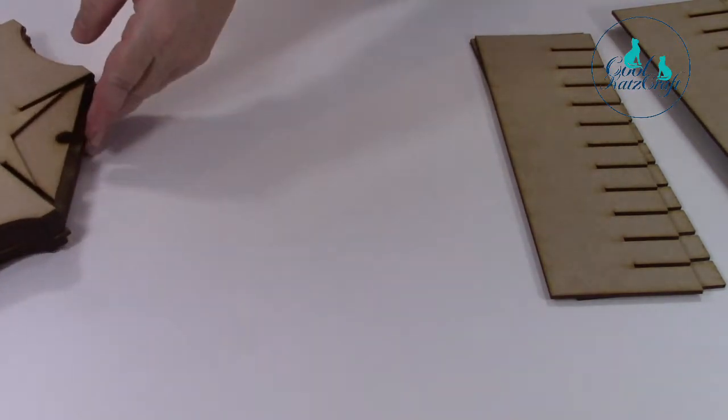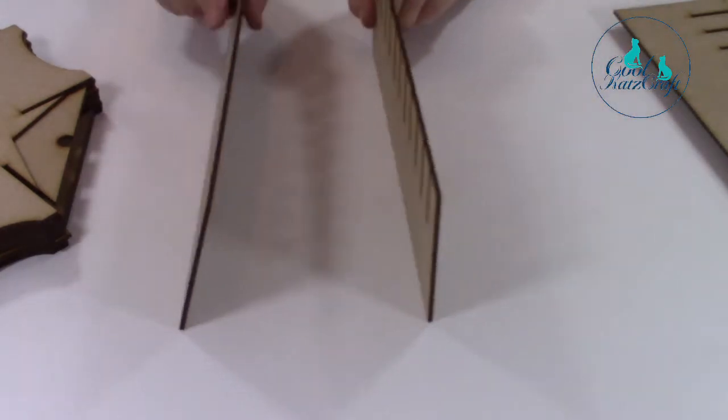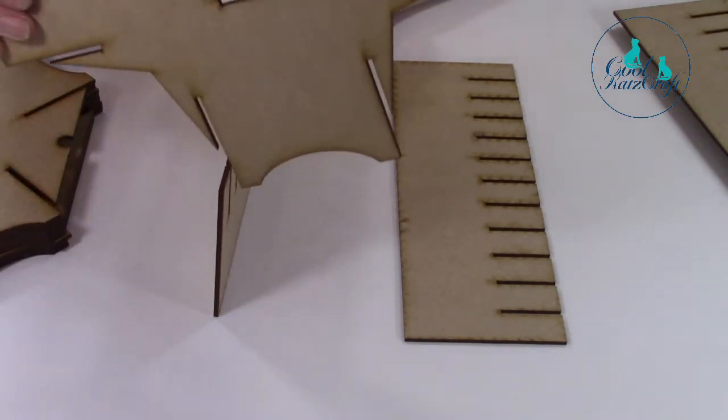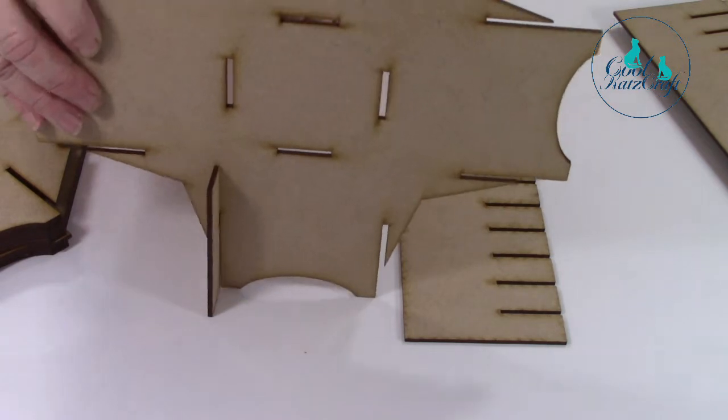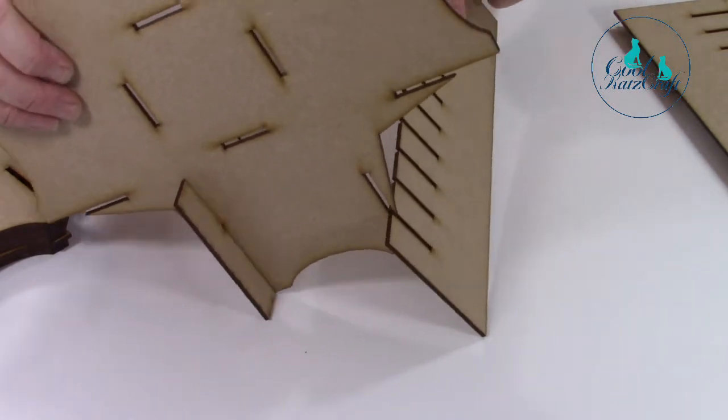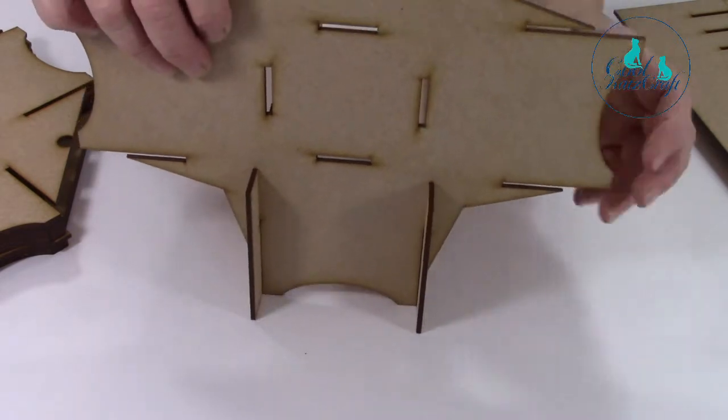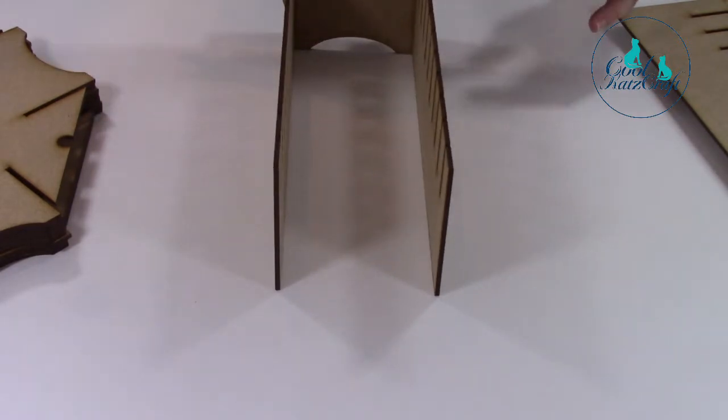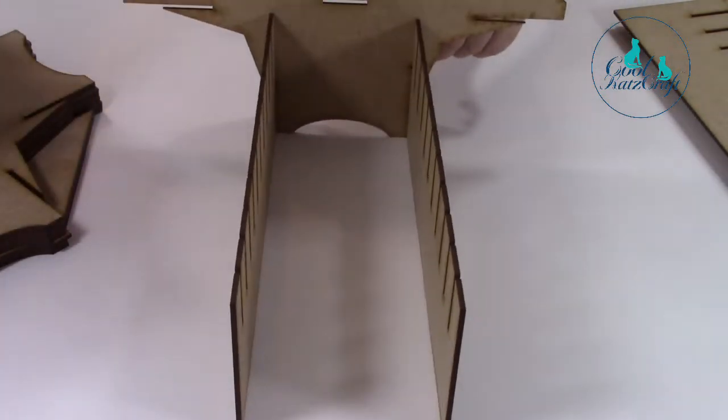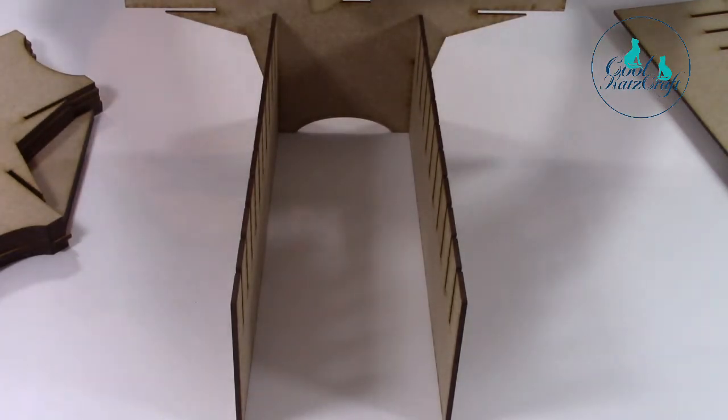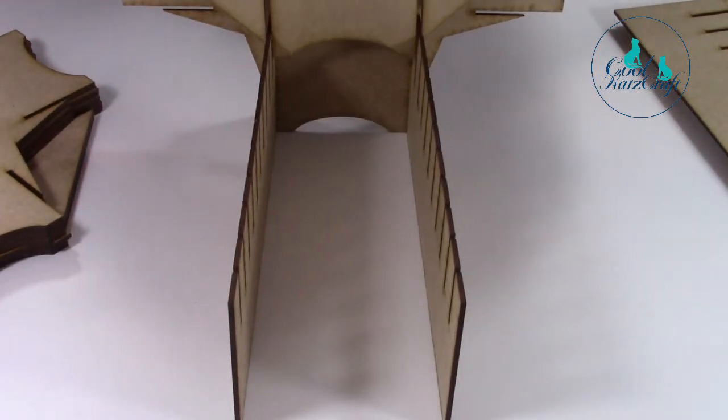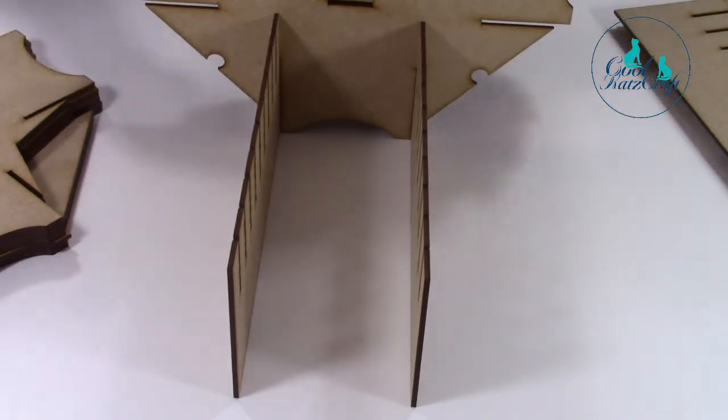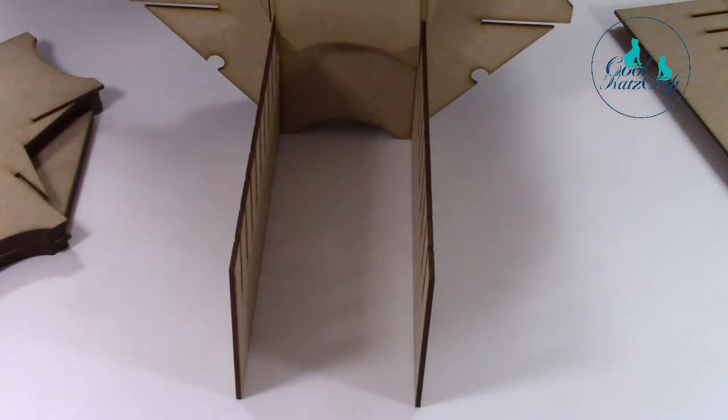We're going to start. I'm going to take two of our panels and I'm going to slot the first one in. You don't need any glue for this because the tension when it's completed will hold it in place. Now we're going to put the next one in, this is a normal shelf.